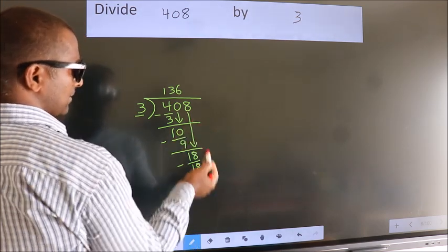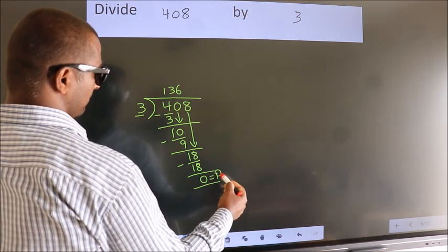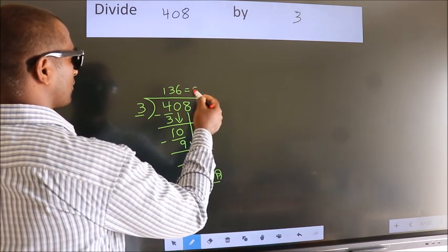No more numbers to bring it down. So we stop here. This is our remainder. This is our quotient.